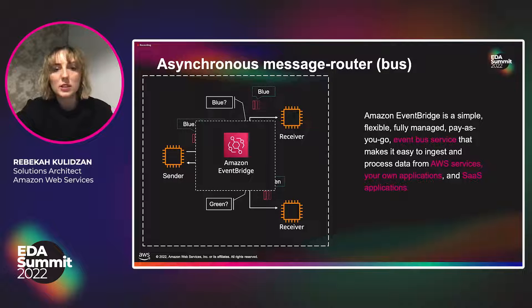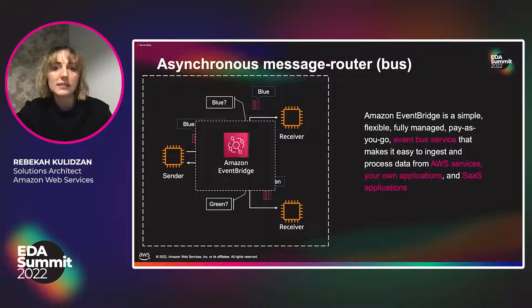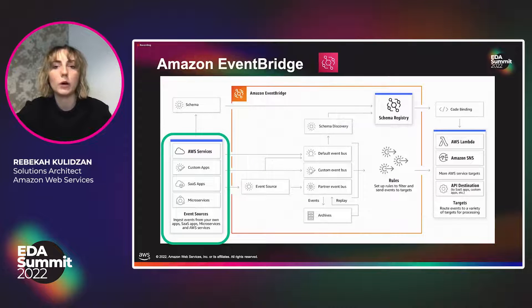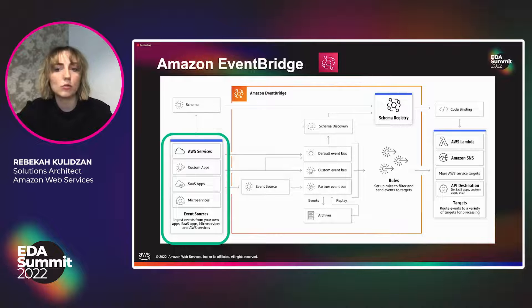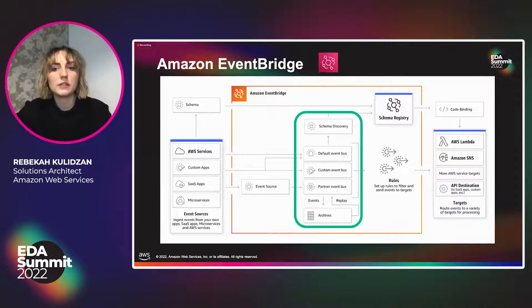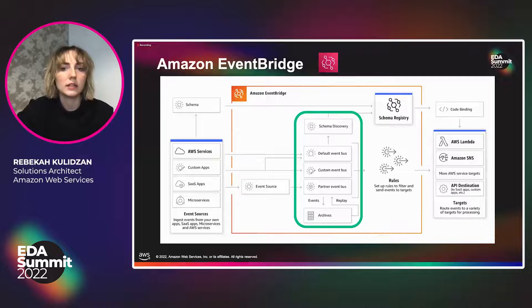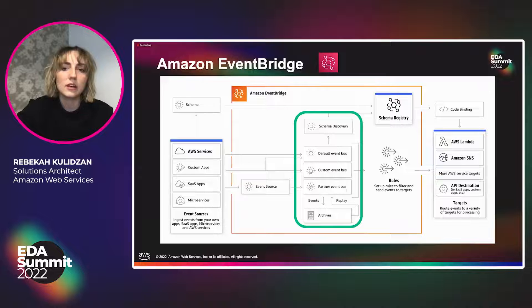Amazon EventBridge is a simple, flexible, fully managed pay-as-you-go event bus service that makes it easy to ingest and process data from AWS services, your own applications, and SaaS applications. It reduces coupling and makes it efficient for senders and receivers. EventBridge connects applications using events — an event is a signal that a system state has changed, for example a change in a customer support ticket. EventBridge allows you to ingest these events from AWS services already in your account, custom applications, or SaaS providers. To write code to react to events, you need to know the event schema, which includes title, format, and validation rules for each piece of data.